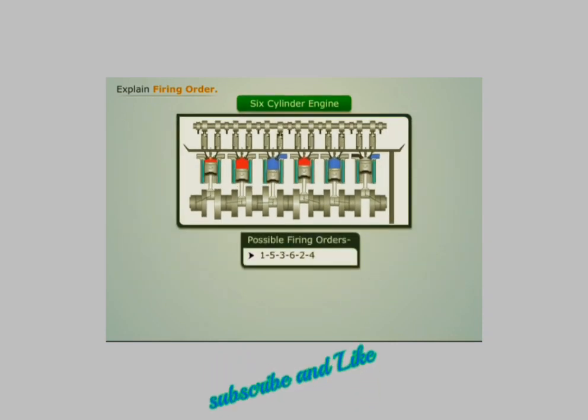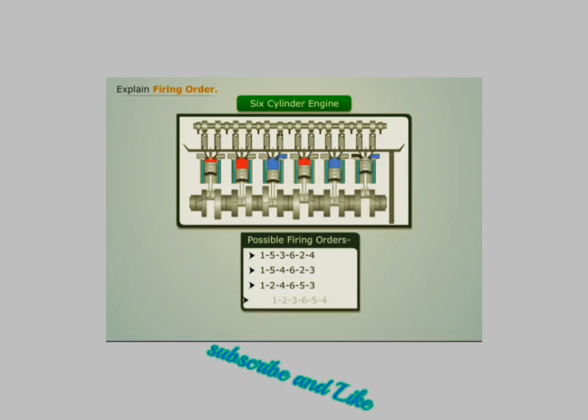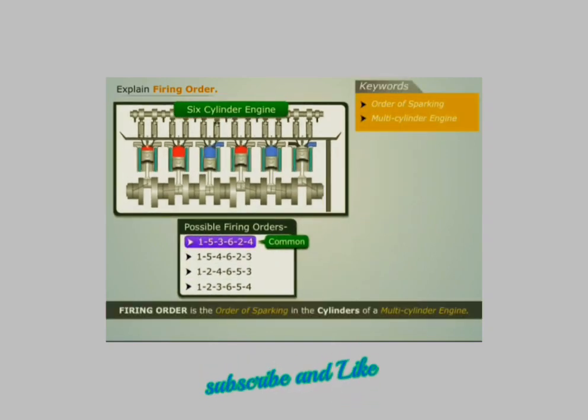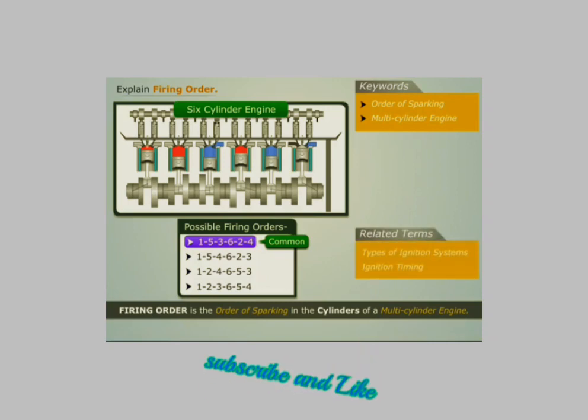Similarly, for a six-cylinder engine, the possible firing orders can be 1-5-3-6-2-4, 1-5-4-6-2-3, 1-2-4-6-5-3, and 1-2-3-6-5-4. But the firing order 1-5-3-6-2-4 is most commonly used.